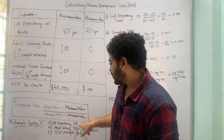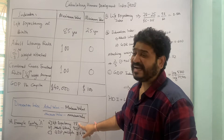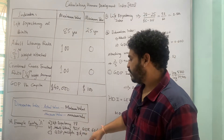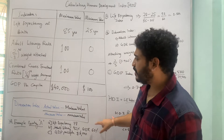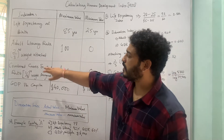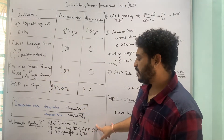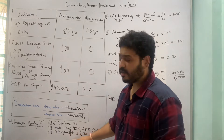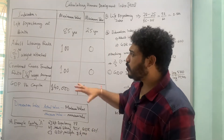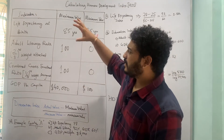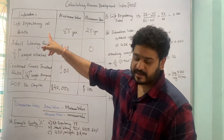Let us take an arbitrary example of Country A, which has a life expectancy of 78 years, an adult literacy rate of 92%, a combined gross enrollment ratio of 60%, and a GDP per capita of $8,840. We will now calculate the dimension index for each of these indicators.